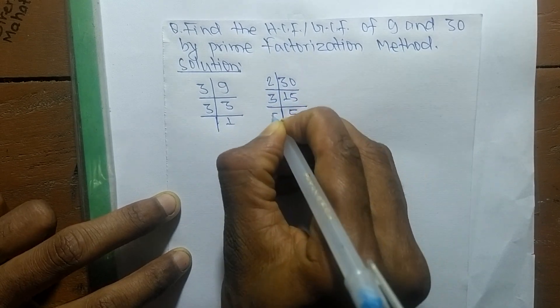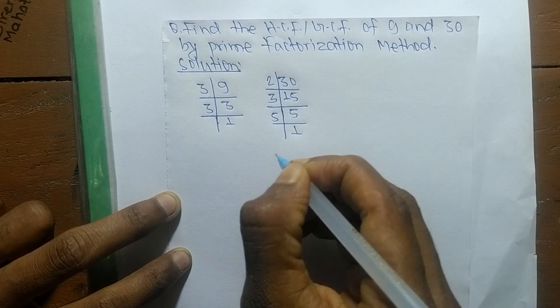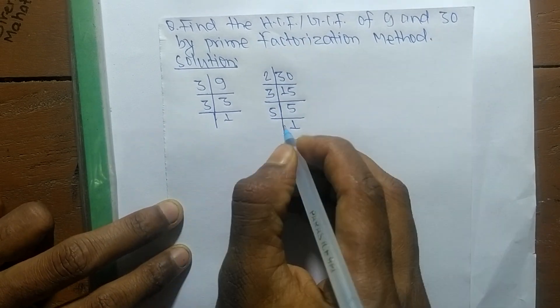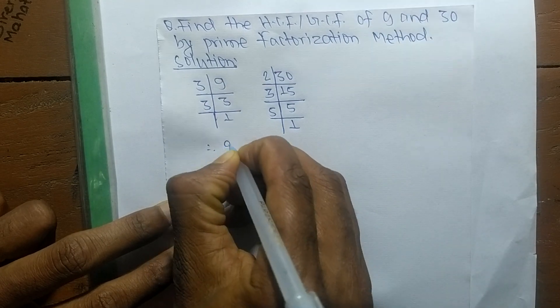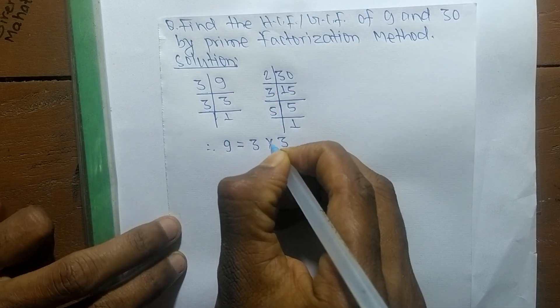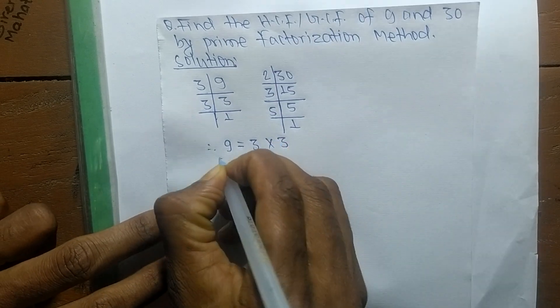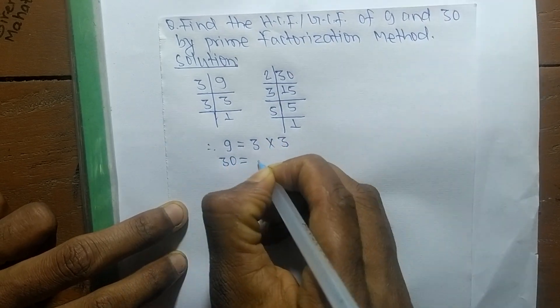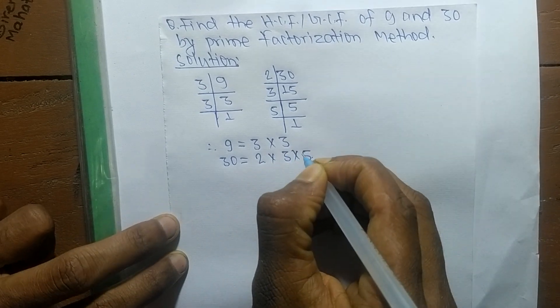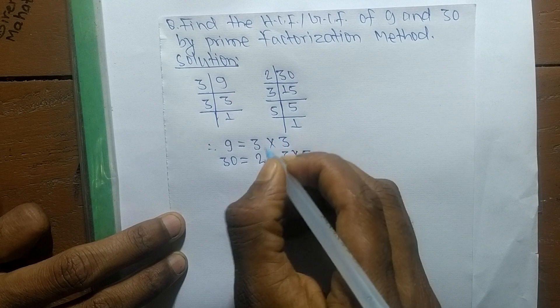5 times 1 means 5. So after finding out prime factors from these prime factors, we can write 9 is equal to 3 times 3, and 30 is equal to 2 into 3 into 5.